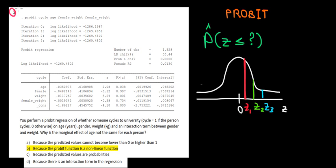Let's work on question 2 in this video. So we have here a probit regression and we're regressing the probability that someone is cycling to university based on the age, based on the gender, weight, and an interaction term over here.